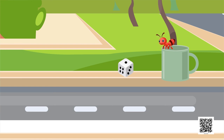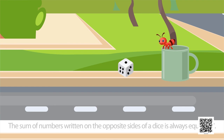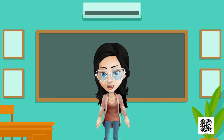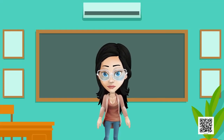The box was actually a dice — just like the dice you use when you play Ludo! There are six numbers marked on different faces of this dice. An important fact: the sum of the numbers written on the opposite sides of a dice is always equal to seven.